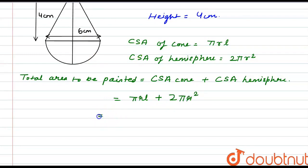Here l can be written as √(h² + r²). So the formula becomes πr√(h² + r²) + 2πr².